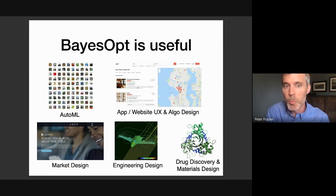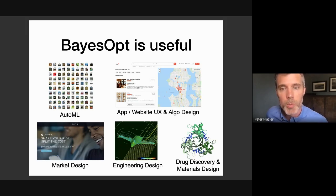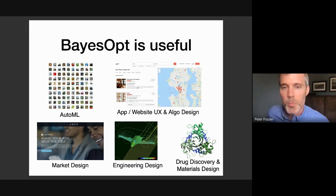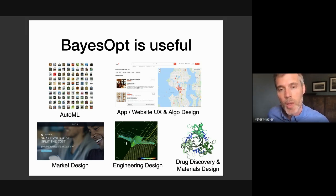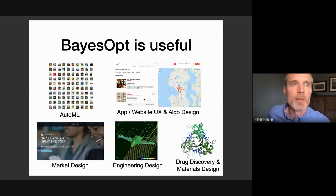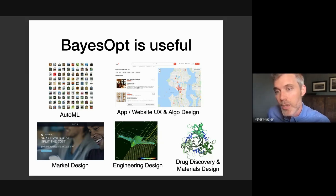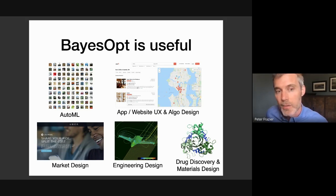Bayesian optimization has probably been most widely used in hyperparameter tuning for machine learning and AutoML, and is used at Google and Uber to tune machine learning algorithms. It originated in engineering design, where the interest was in designing things using physics-based computational codes, and it's still widely used there. It's also useful for market design, app design, website design, and applications in material science and drug discovery, where evaluations can easily take days or weeks.